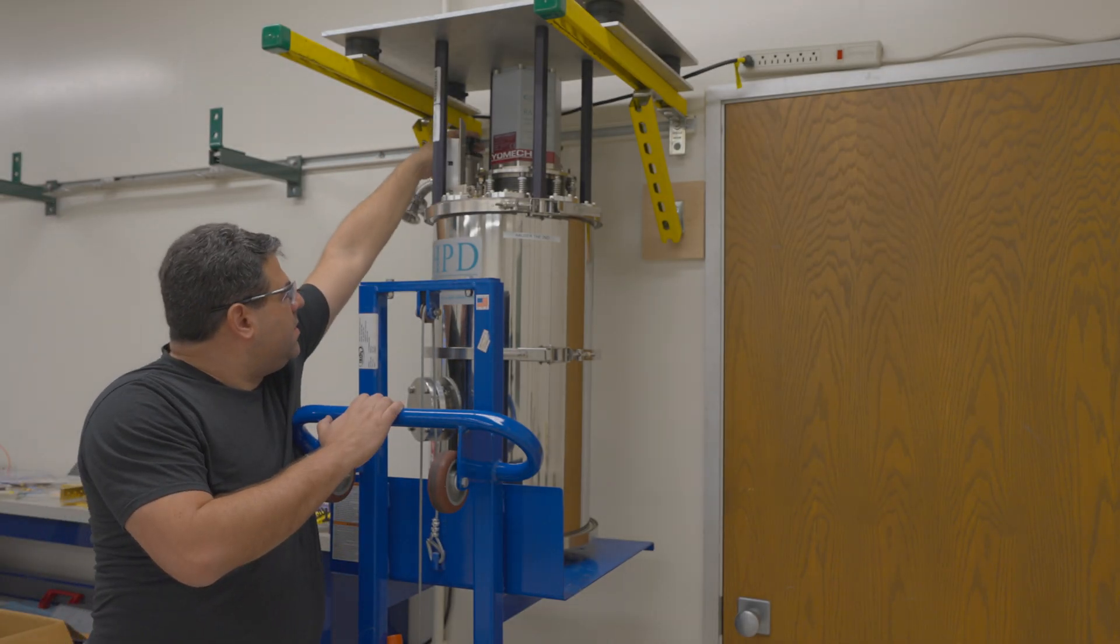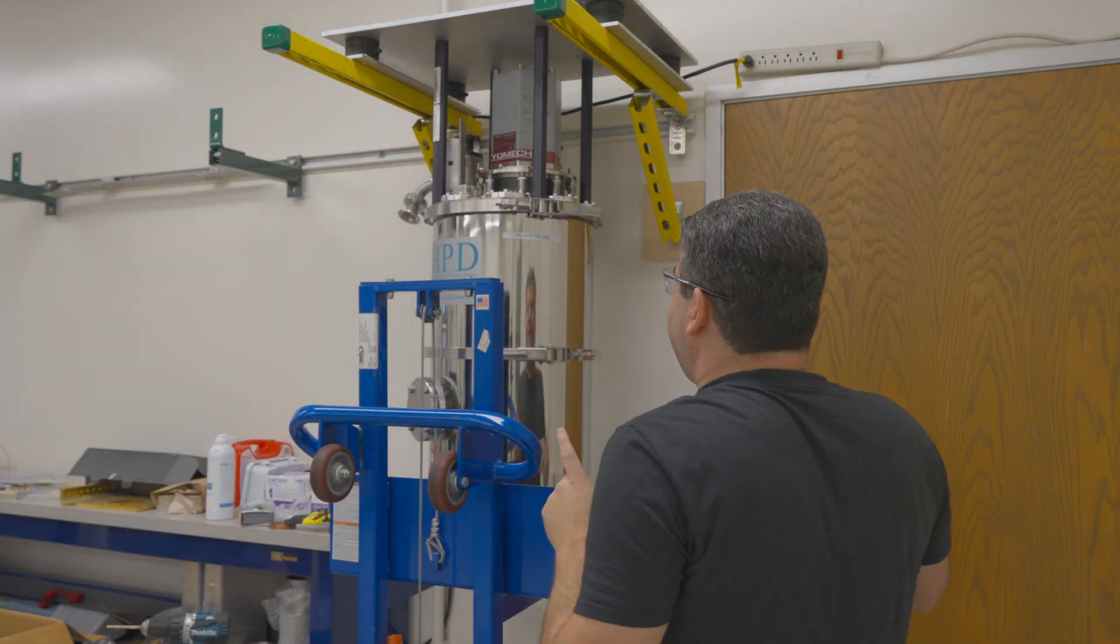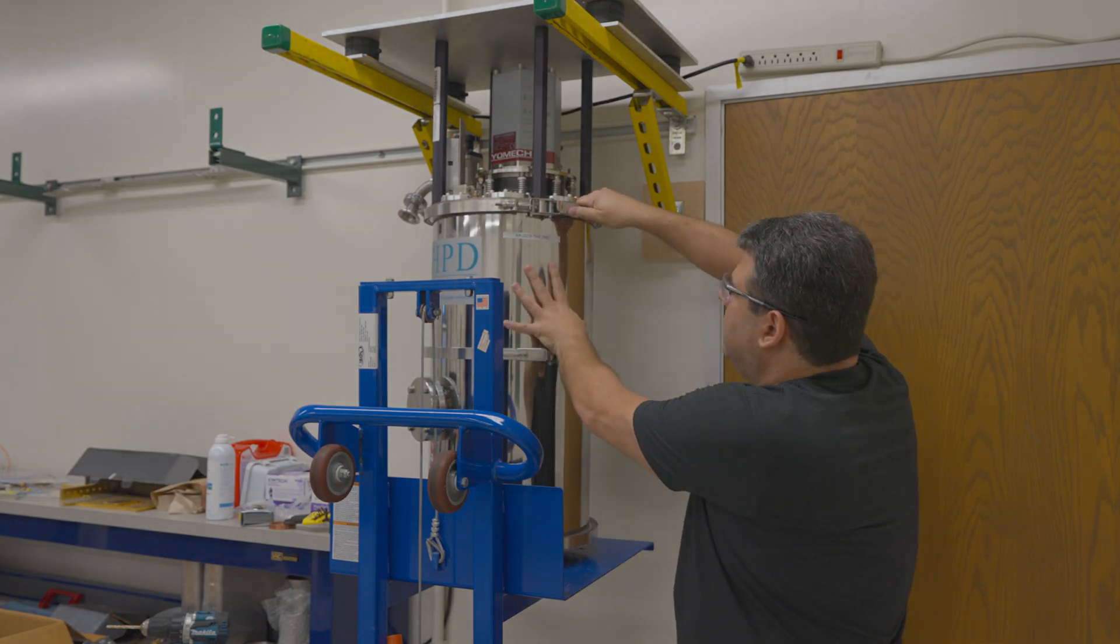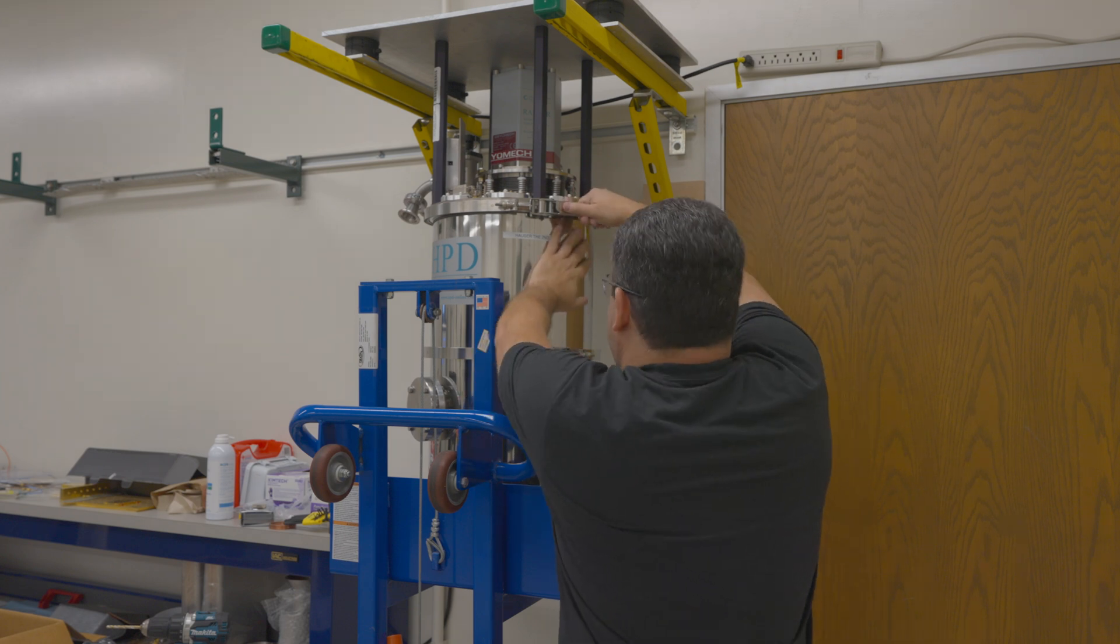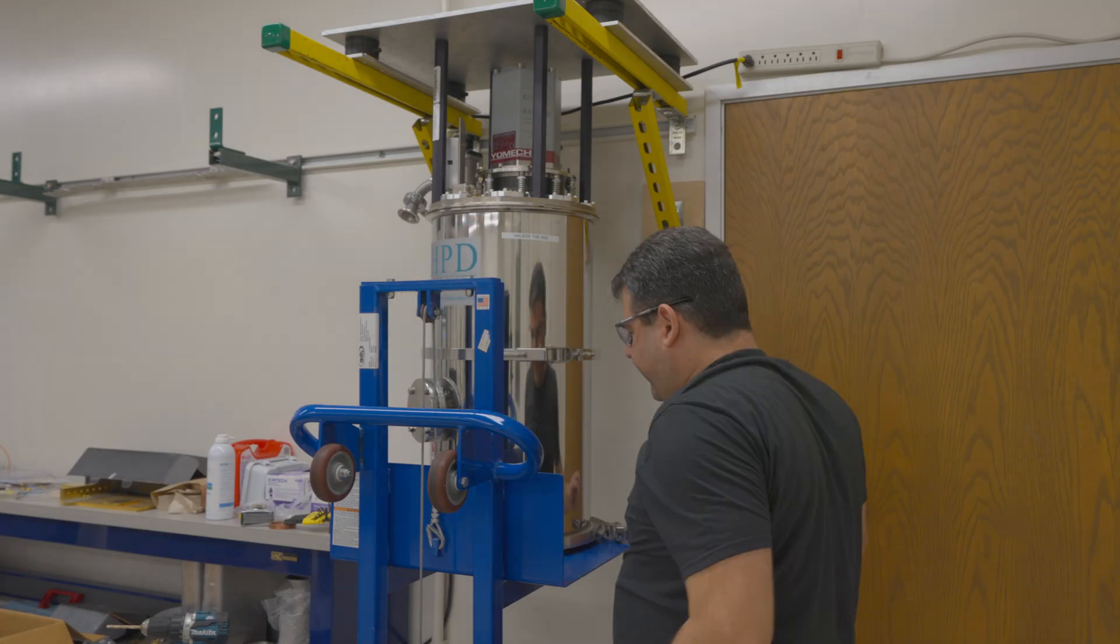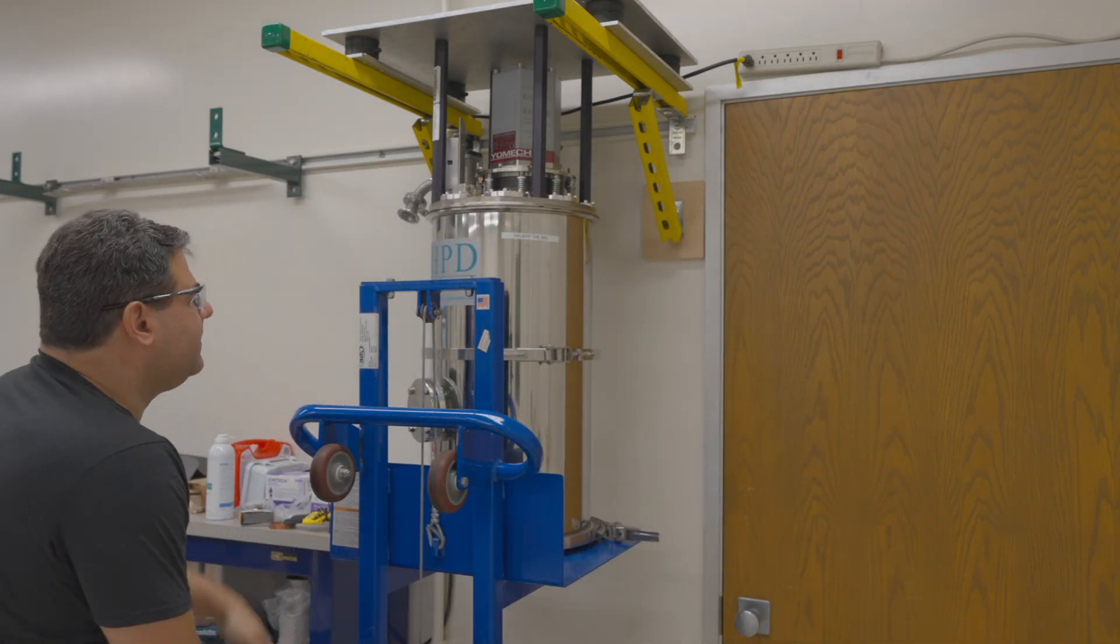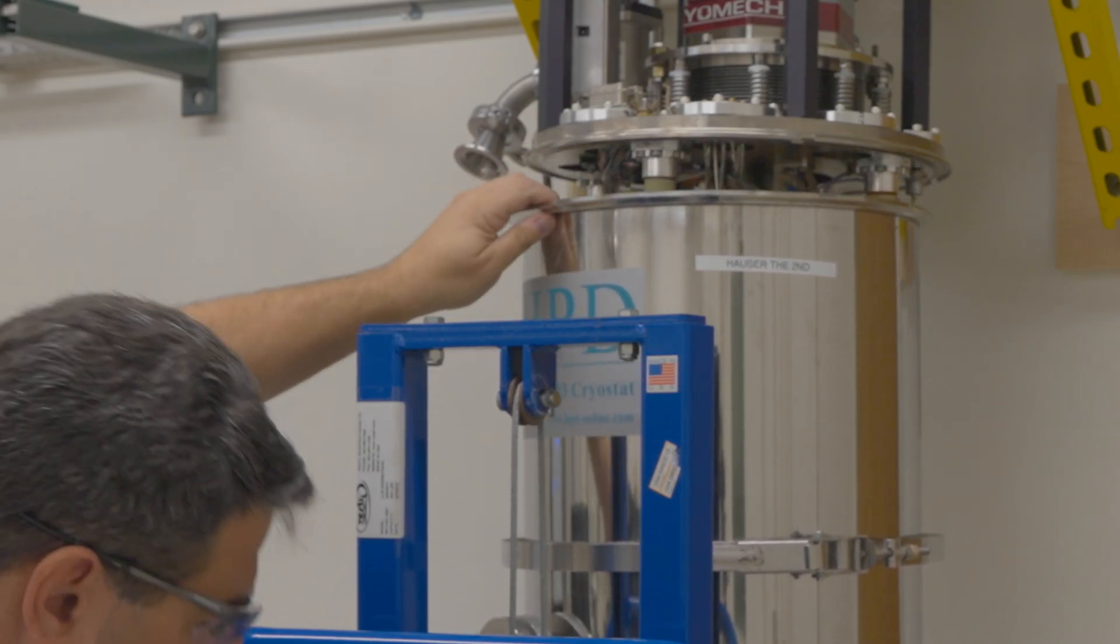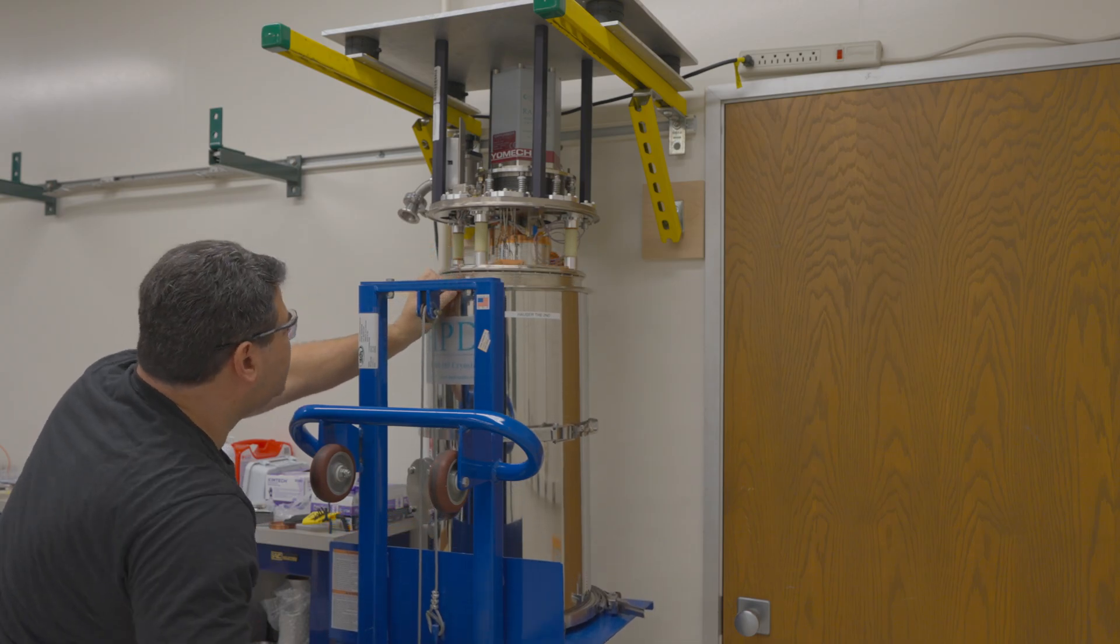So vacuum's broken. Now we can remove the shields. These fridges have a really nice system. So instead of having to take off a million bolts, we can just open up these clamps, I think. Never done it before, so we'll find out. Oh yeah. So now we should just be able to lower the shields off of it.